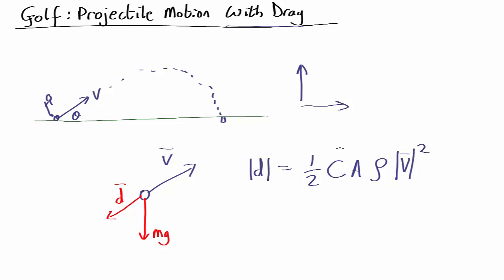Drag coefficient for a golf ball with dimples is about 0.25. If there were no dimples it would be about 0.5, that's why you put dimples in. This is just the cross-sectional area pi r squared, the radius of a golf ball is 21 millimeters, and this is just the density of air.